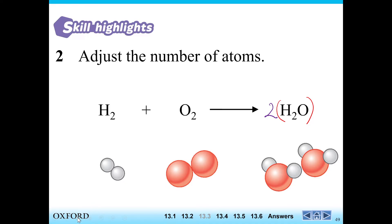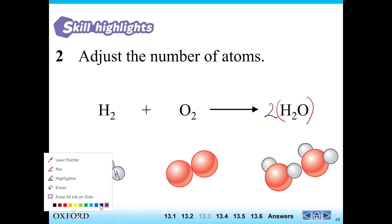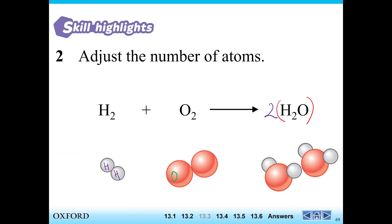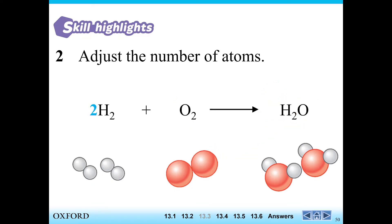Now let's count the number of atoms. Do they match? On the left I have two hydrogen atoms and two oxygen atoms. On the right, after adding coefficient 2 in front of H2O, I now have two oxygen atoms — so oxygen is perfectly balanced. But now there's a problem: after adding the coefficient of 2, I now have four hydrogen atoms on the right. So I need to go ahead and add a 2 in front of hydrogen on the left side as well. Now what does this 2 actually mean? When you add the coefficient in front, it means you multiply by that number.